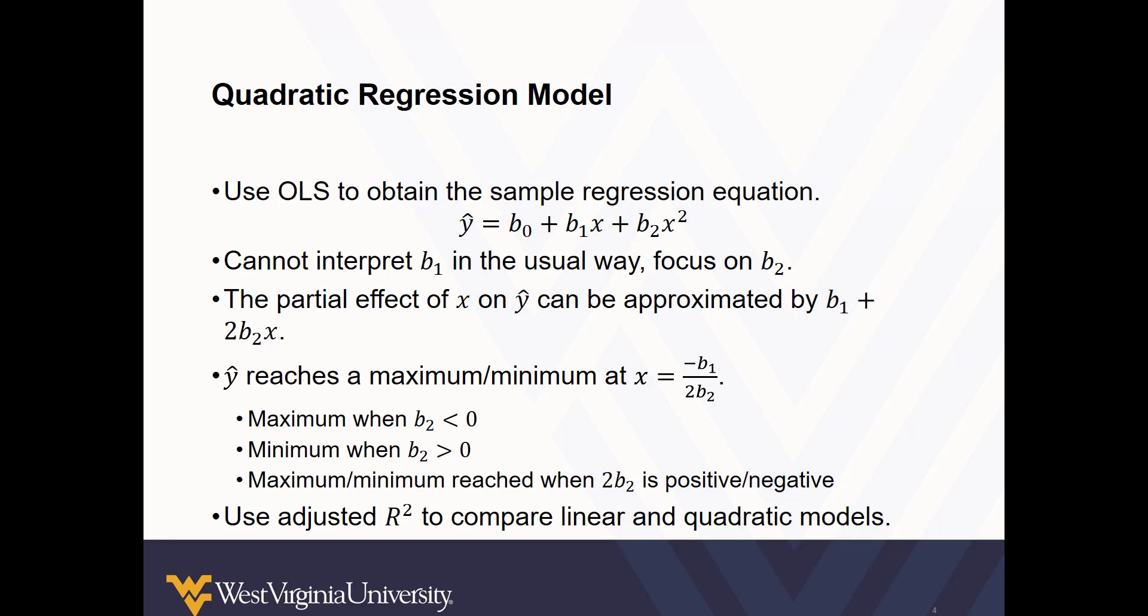We are also able to find where our estimated value of y reaches a maximum or a minimum using this equation for x: minus the coefficient for b₁ divided by 2 times the coefficient b₂. And this can come in handy in a variety of different circumstances. One of those examples will be illustrated.